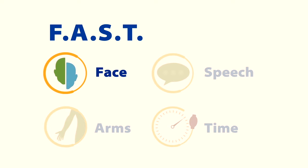Ask the person to smile and check whether one side of their face is drooping. A is for Arms.